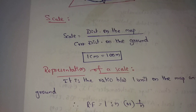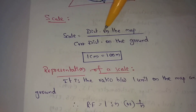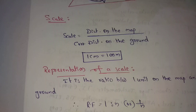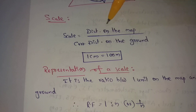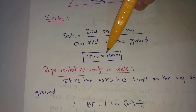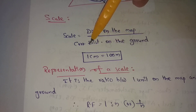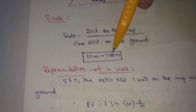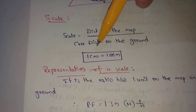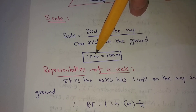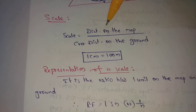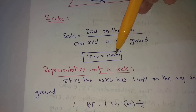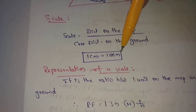Next topic: scale. Scale is equal to the distance on the map divided by the corrected distance on the ground. For example, if you want to draw a line of 1 cm on the drawing sheet and the actual distance on the ground is 100 meters, that line represents 100 meters on the ground.